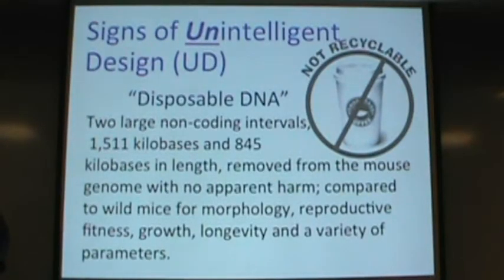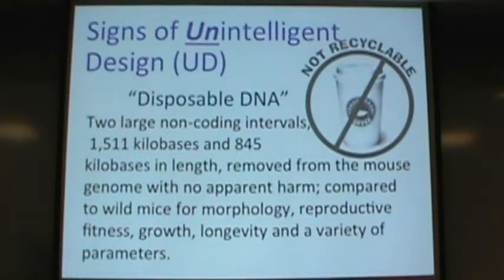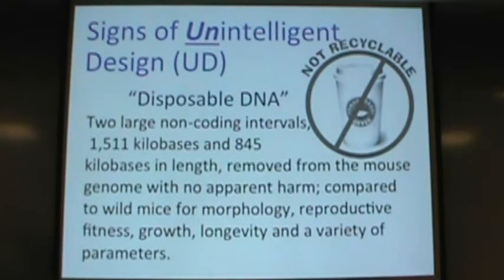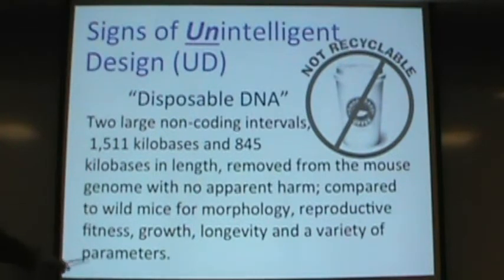Another sign of unintelligent design is non-coding DNA — it looks like junk. How do we know it's junk? One scientist deleted over 2 million nucleotides, then compared the modified mice to wild ones, and found no difference between them.